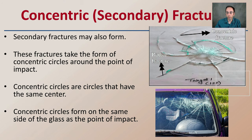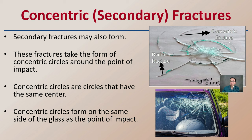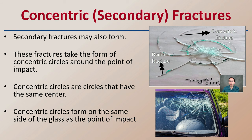Concentric fractures are the next kind of fractures that also occur. Where the radial fractures are those radiating lines, concentric fractures are secondary fractures that form going in a circle. These fractures take the form of concentric circles around the point of impact — that's why they're called concentric, for their ring-like appearance. These concentric circles form on the same side of the glass as the point of impact, which is why it's important in an investigation to note which side was the inside or the outside.